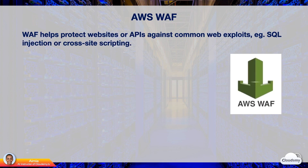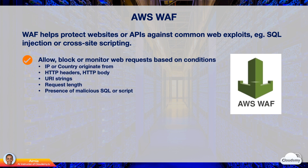AWS WAF is a web application firewall that helps protect web applications or APIs against common web exploits such as SQL injection or cross-site scripting. WAF gives you control over how traffic reaches your applications by enabling you to create security rules that block common attack patterns. You can allow, block, or count web requests based on conditions such as IP addresses, HTTP request headers, HTTP request body, URI strings, request length, malicious script, or SQL code.